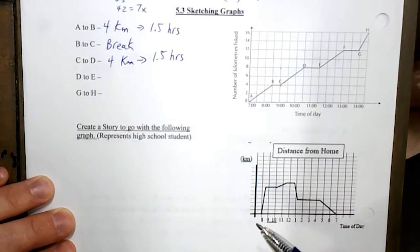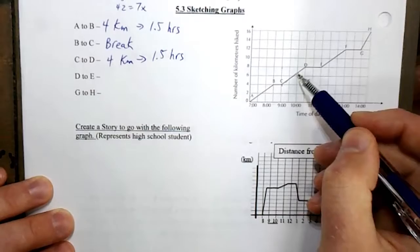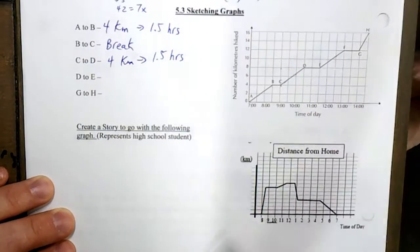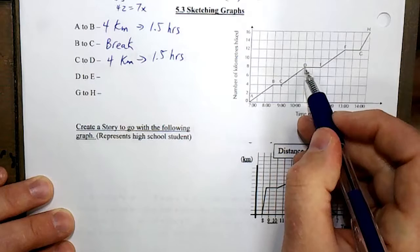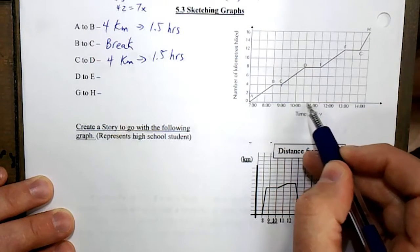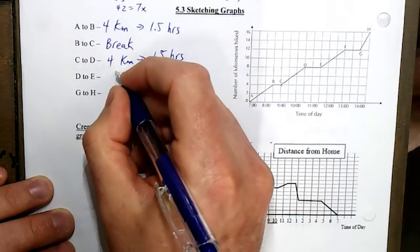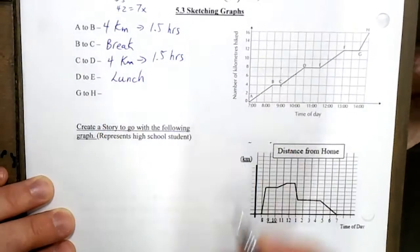So it's key - slope or the steepness represents how fast they're going. D to E is a much longer break, 10:30 to 11:30, so let's just put this as an early lunch. They took a long break, they were tired, they've traveled 8 kilometers.